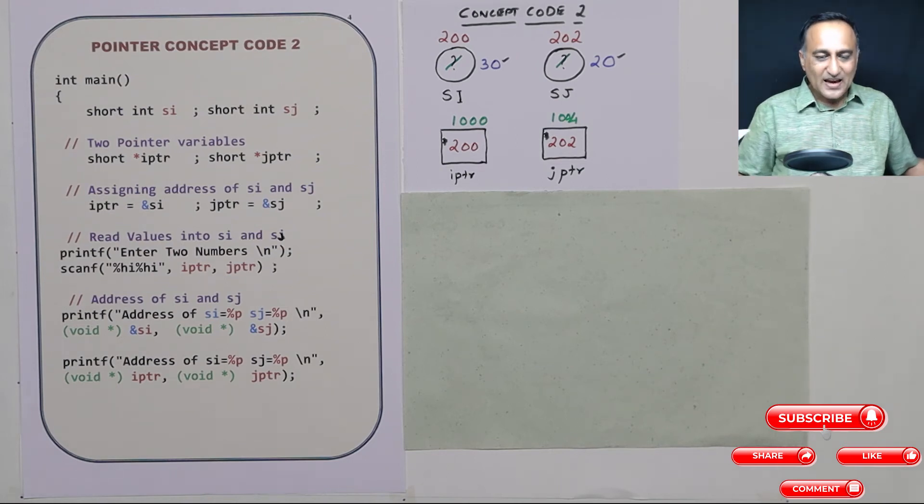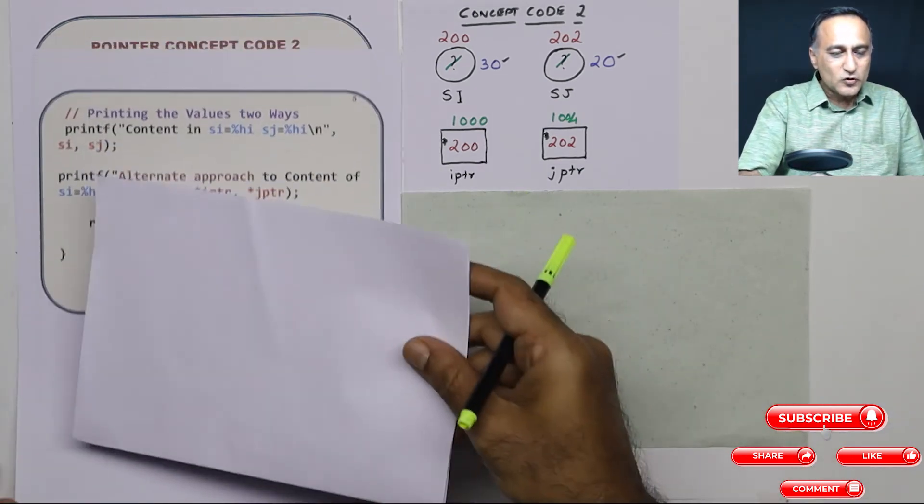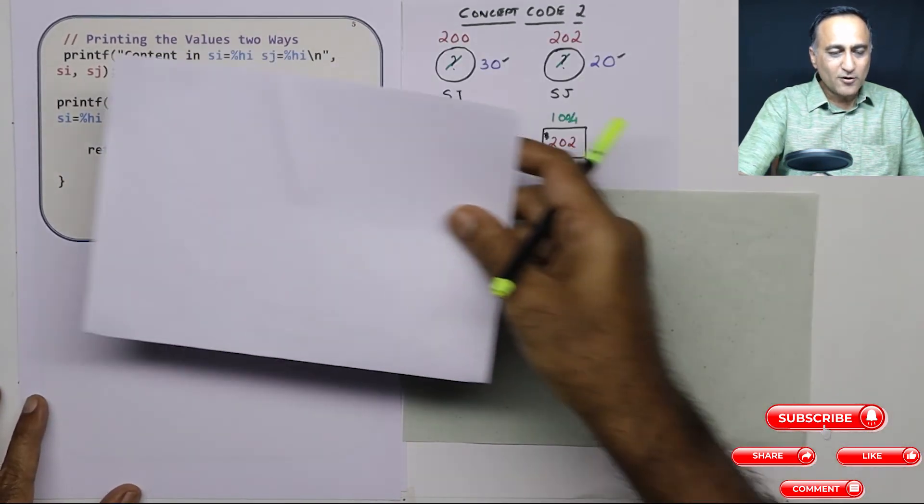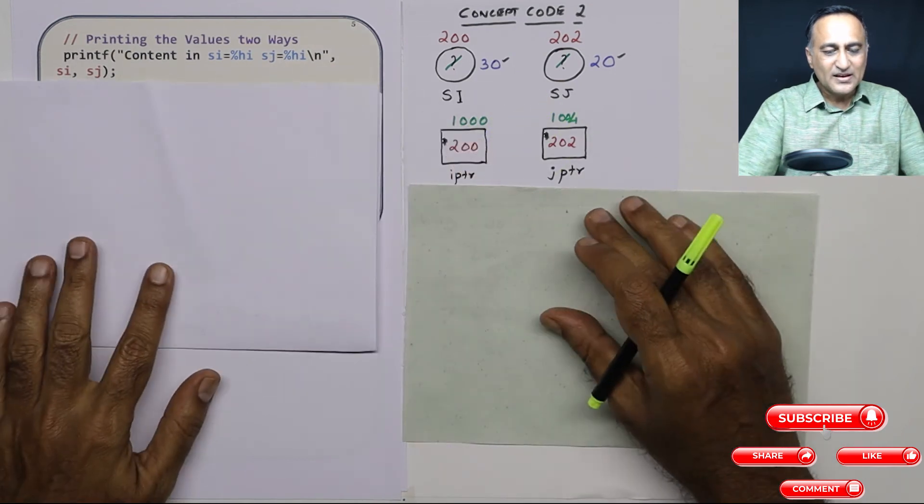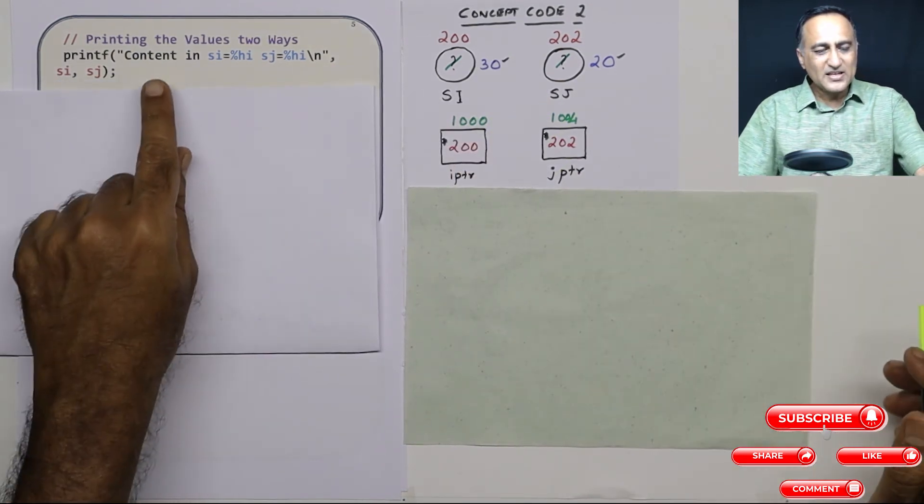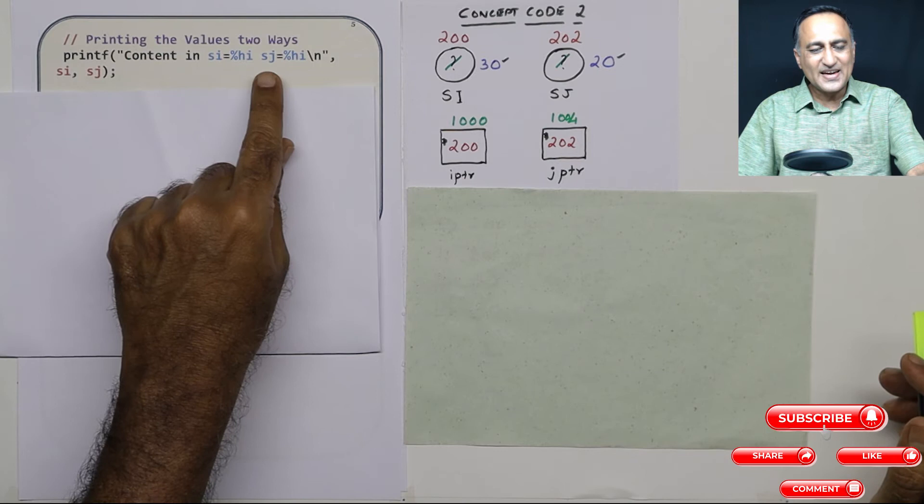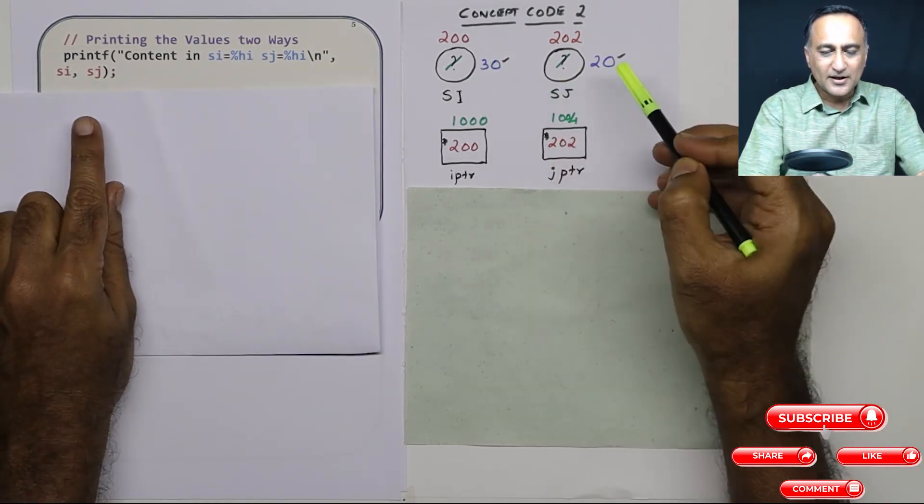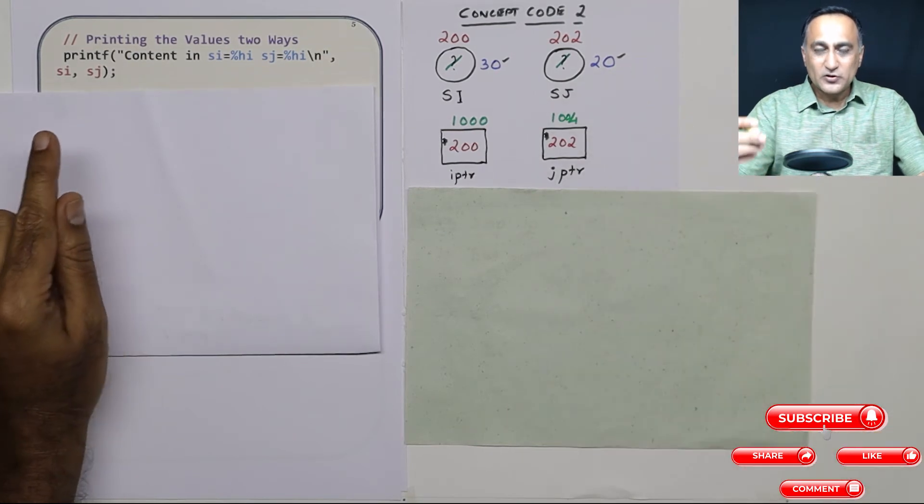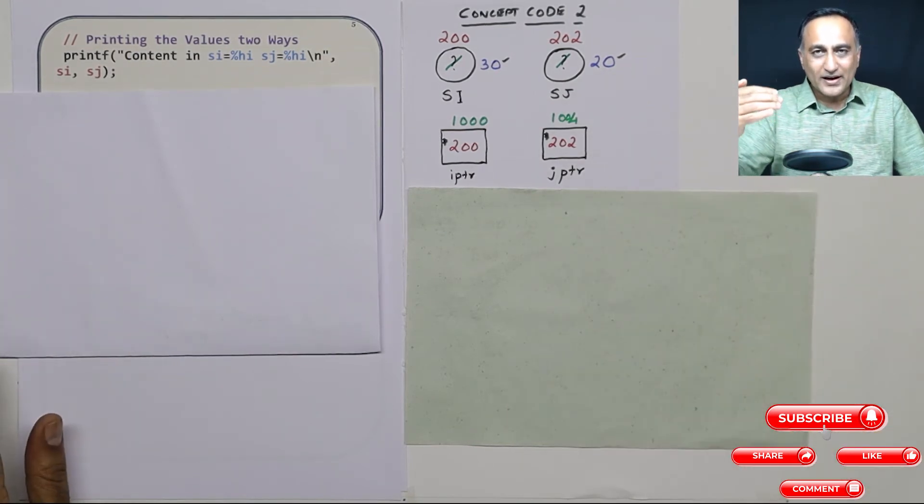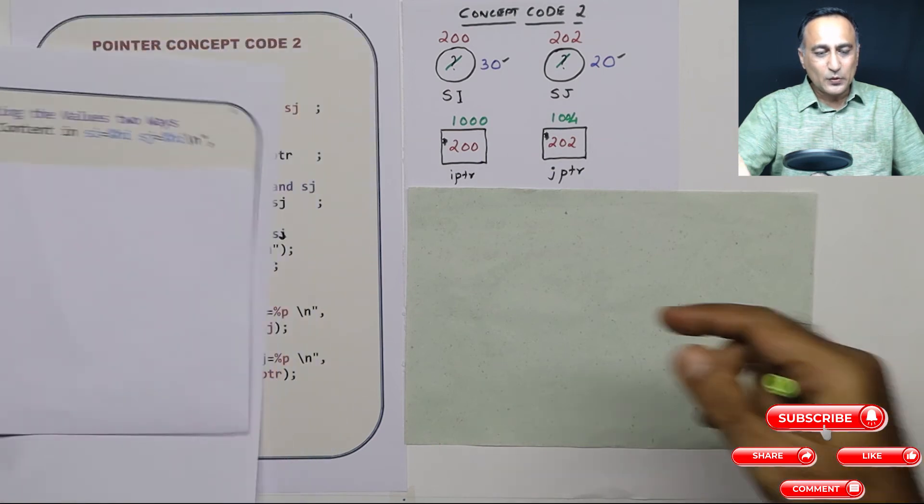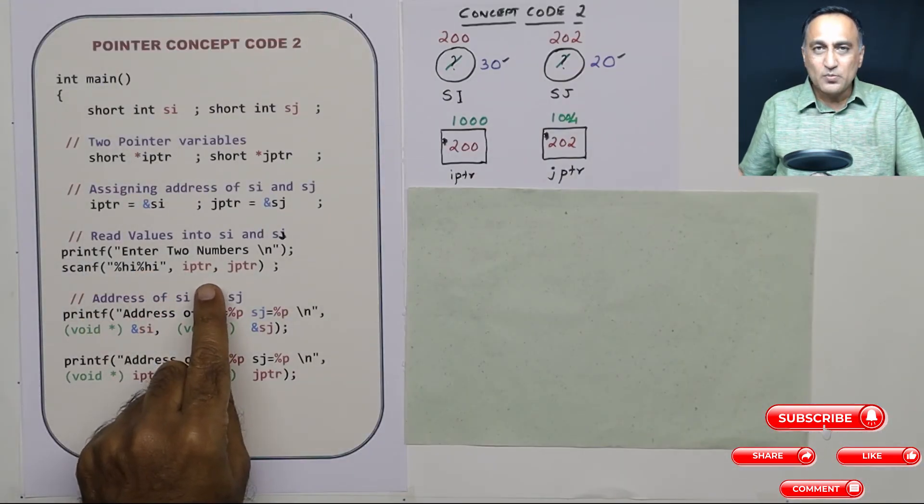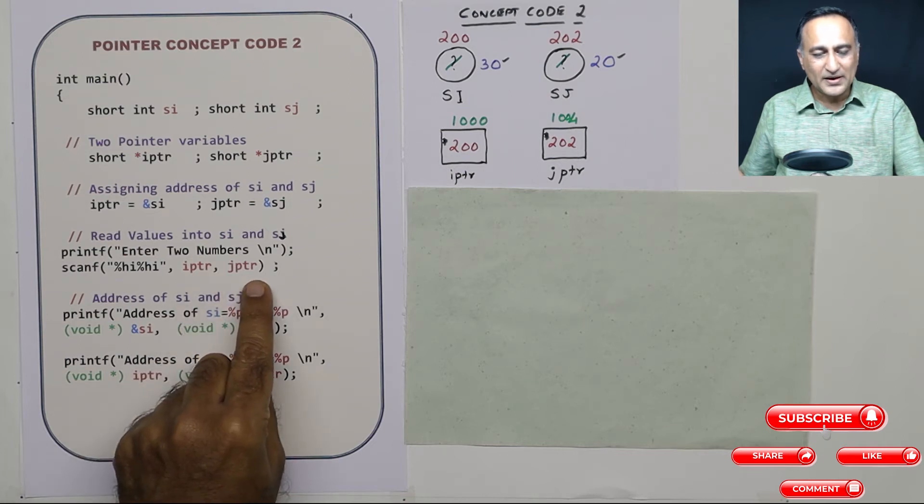Now let us say I want to print the values of 20 and 30, that is the value of SI and sj. The simple method would be content in SI and sj is %hi %hi. So it will print 30 and it will print 20, assuming we have entered or read from the keyboard 30 and 20.